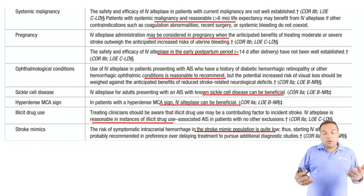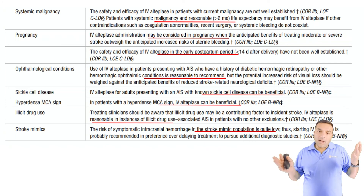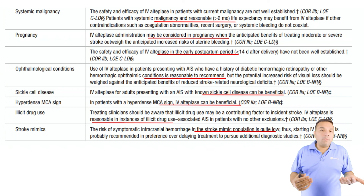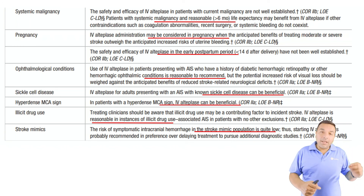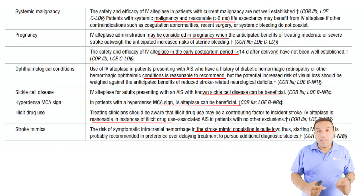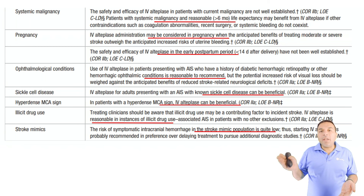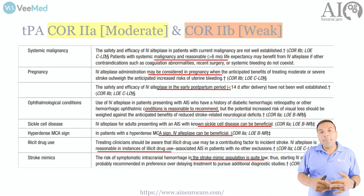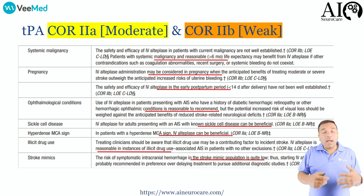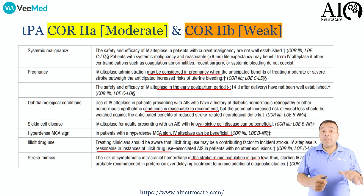For stroke mimics — for example after correcting hypoglycemia or hyperglycemia and the patient hasn't improved — consider giving TPA. The risk of intracranial bleeding in someone who doesn't actually have a stroke is very low, whereas the risk of permanent disability from a true stroke is high. Everything is about risk and benefit; have a discussion with the family and consider giving TPA.